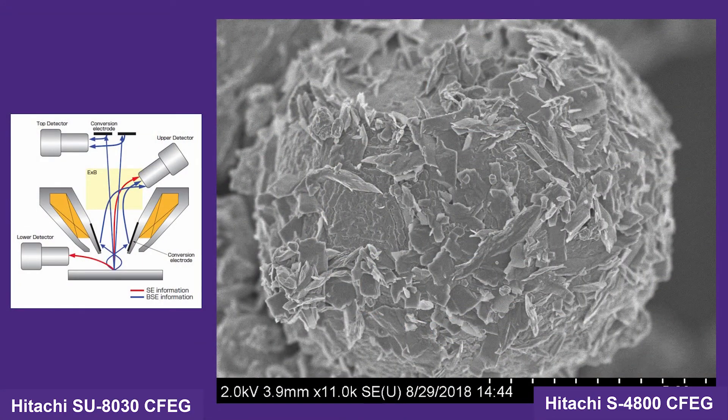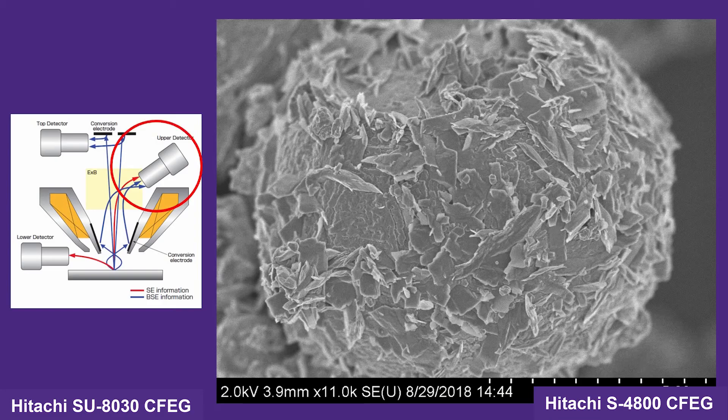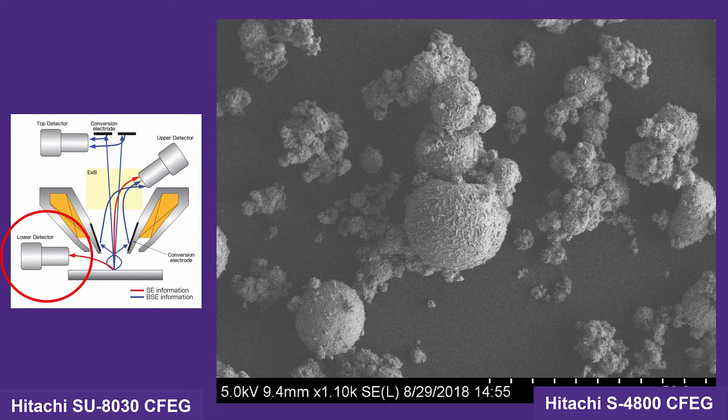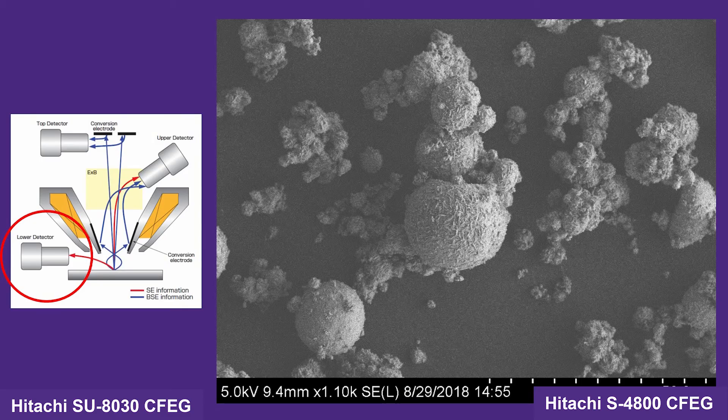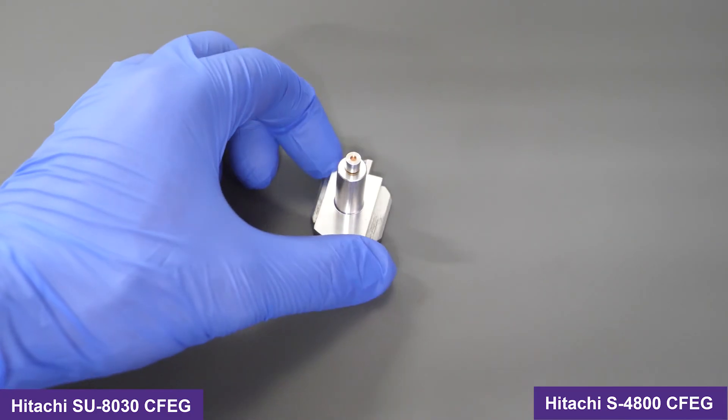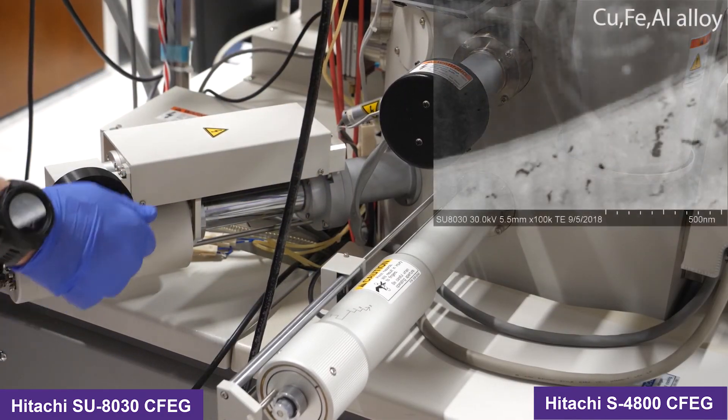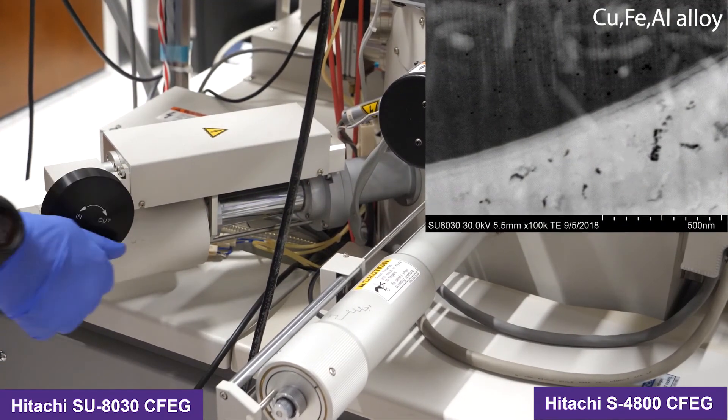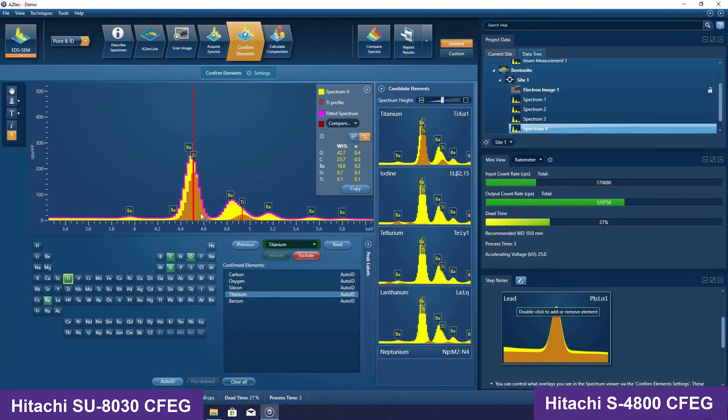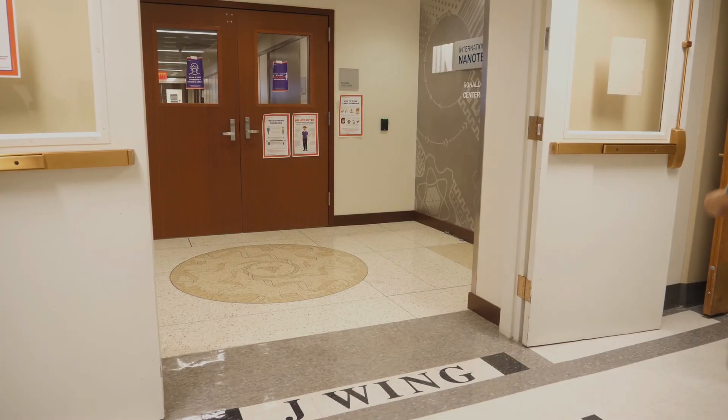Unlike the previous SEMs we saw, this SEM is equipped with an upper in-lens detector for ultra-high resolution imaging, as well as the traditional lower detector for topographical imaging. The SU8030 also has a dedicated STEM detector for low-kV bright-field STEM imaging and an EDS detector.